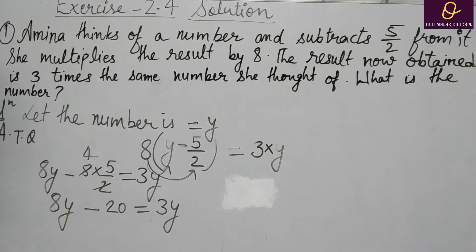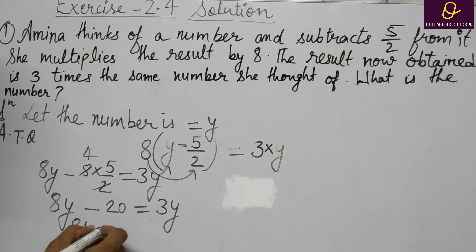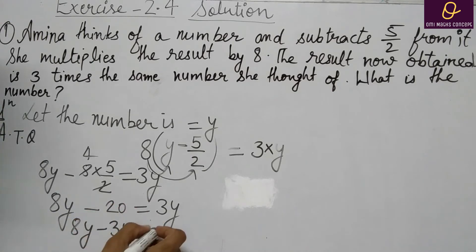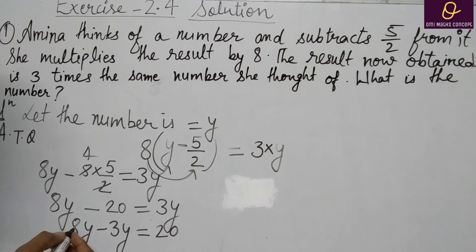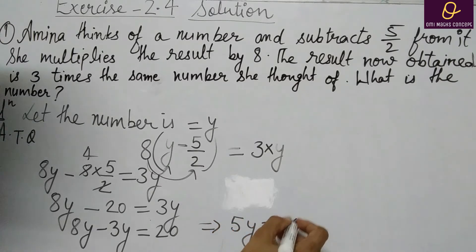Now we will write transposing: minus 20 to right hand side and 3y to left hand side. 8y minus 3y — 3y को आपने minus किया — is equal to 20. 20 minus था, जब आप transposing करोगे तो plus हो जाएगा. 8y minus 3y, that is 5y, is equal to 20.